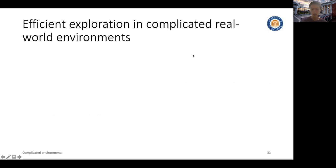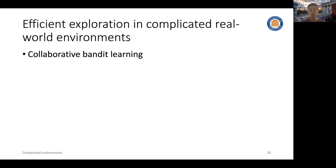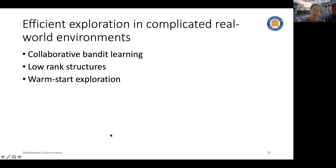In this section I'm going to cover three different directions in this line of research. The first direction is called Collaborative Bandit Learning, where the research focus is in a multi-user environment and the goal is to design efficient exploration strategies that leverage the user dependency structure. The second direction is how to design exploration strategies for problems with low-rank structures. And the third direction is how to combine offline historical data to warm start the algorithm so as to reduce exploration.